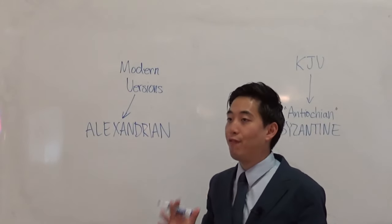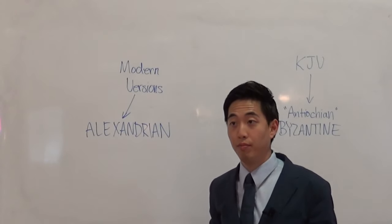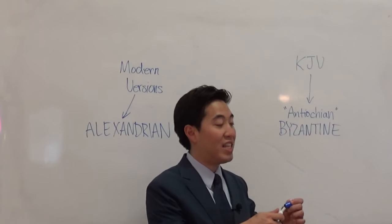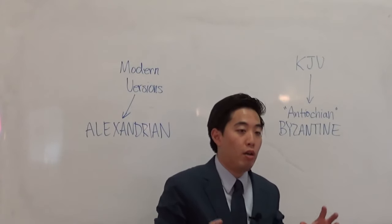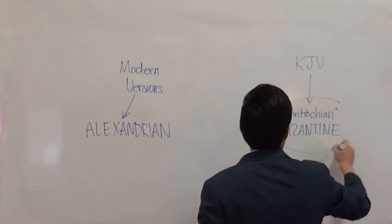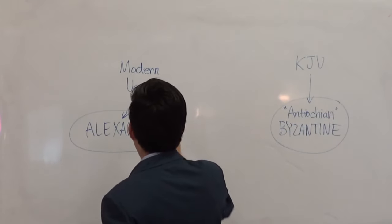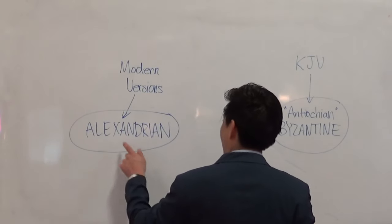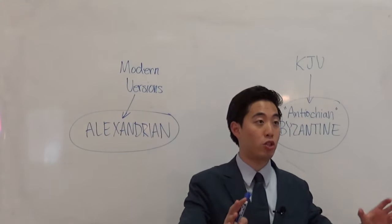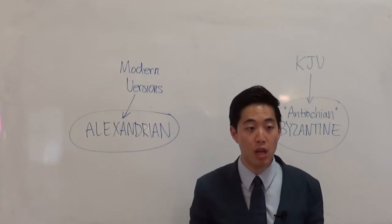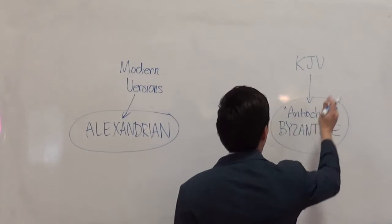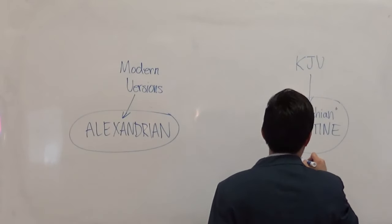Not every verse in modern versions is from Alexandrian, and not every verse in the King James Bible is from Antiochian Byzantine — that's important to understand. We believe mainly this group of manuscripts is where the King James Bible came from, and mainly the modern versions came from the Alexandrian line.